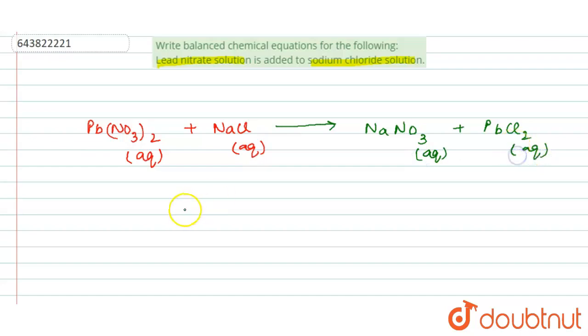So to balance this equation we should equal the numbers of atoms of each element on both the reactant side and product side. So in reactant side there is one lead present and nitrate ions are twice, so two nitrate ions, one sodium and one chlorine.